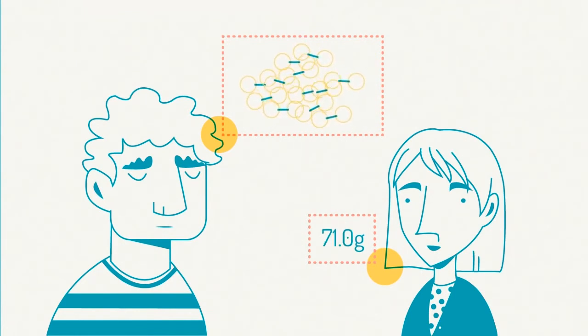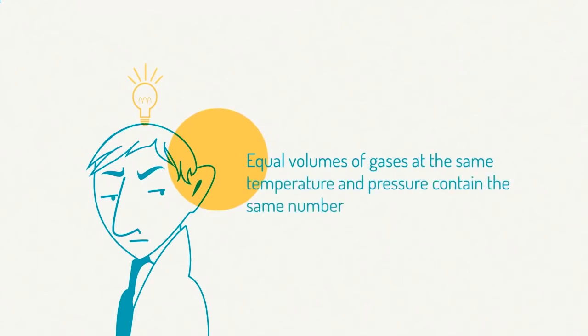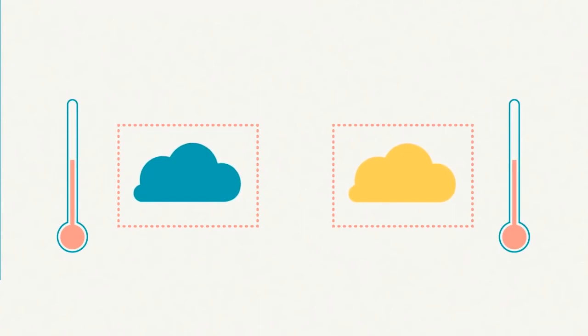In 1811, Avogadro proposed his hypothesis which stated, equal volumes of gases at the same temperature and pressure contain the same number of molecules. This hypothesis made it easier to perform calculations involving gases. This means that one mole of any gas will occupy the same volume as one mole of any other gas, provided that they are at the same temperature and pressure.